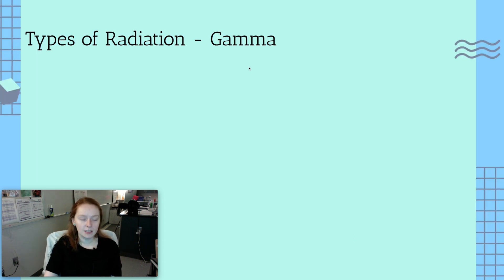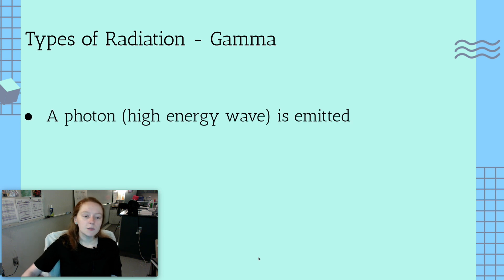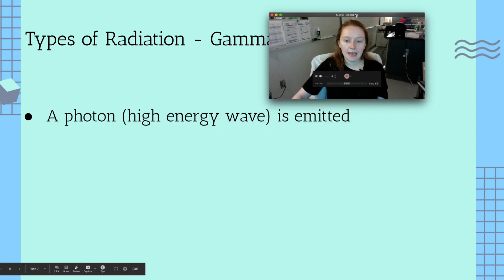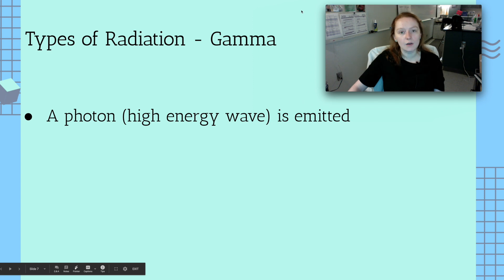Then we get to gamma radiation, and gamma radiation is the gross kind, the nastiest kind. This is where you have a photon, which is a high-energy wave that is spit out of the nucleus of the atom. It's basically just that there's so much potential energy stored within this unstable nucleus that it's spitting energy out. A photon is a wave of light that you can't see. It's not visible light, but it's so small in its wavelength that it will do severe damage if it hits any of your cells in your body.